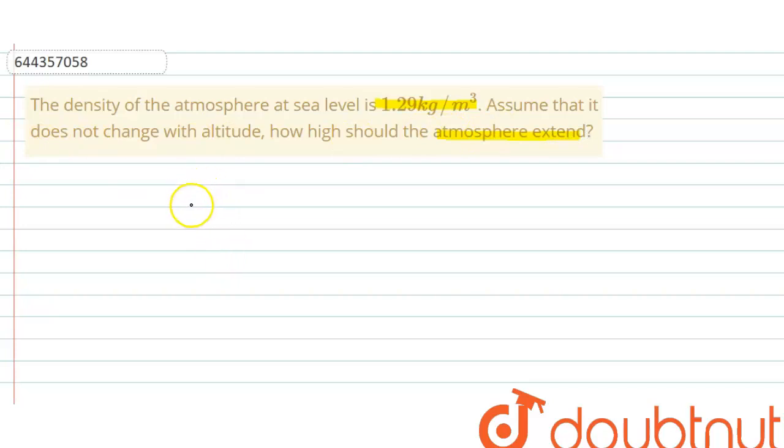And that pressure should be equals to rho g h, where h is the height of atmosphere above sea level and rho is the density which is given. And pressure already we know that 1.01 into 10 to the power 5 pascal. So from here we can calculate height above the sea level atmosphere extended.